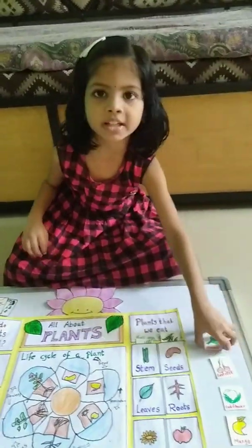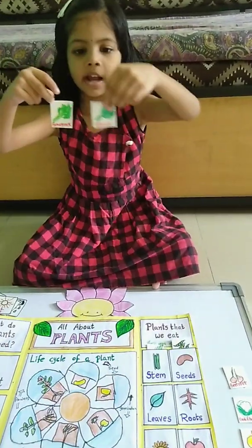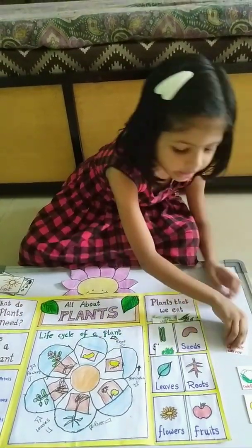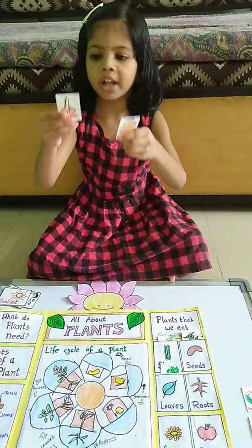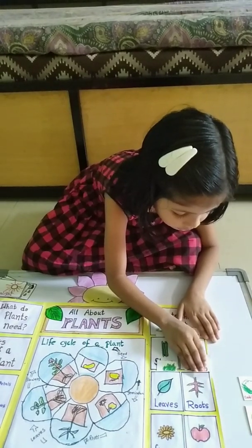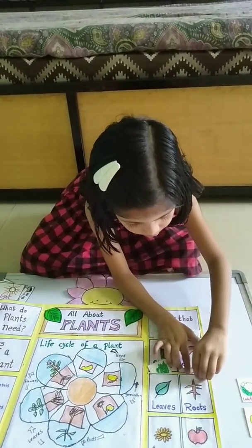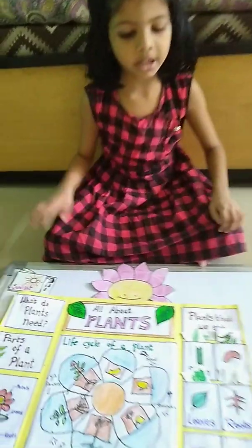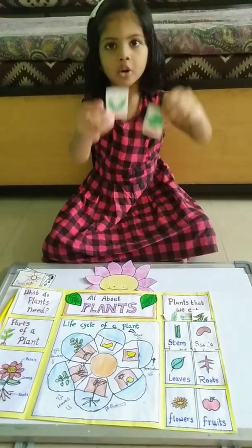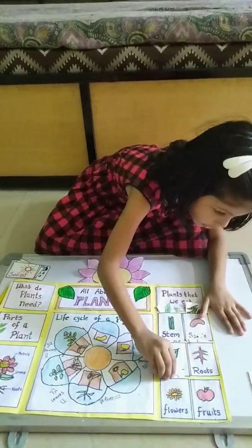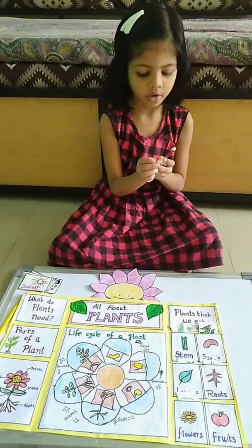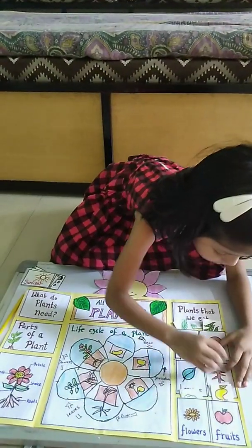Next is leaves, for example fenugreek and spinach. Next is roots, for example beetroot and carrot. Next is flowers, for example cauliflower and broccoli. Next is fruits, for example grapes and mango. Okay, all this we can eat and we get from the plants.